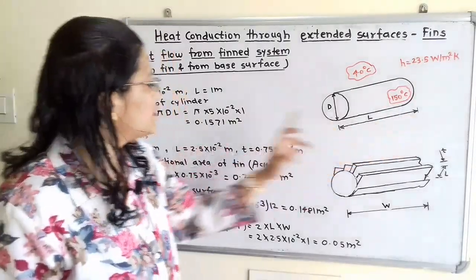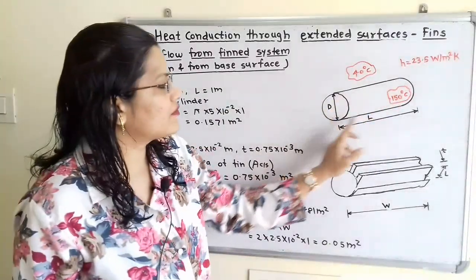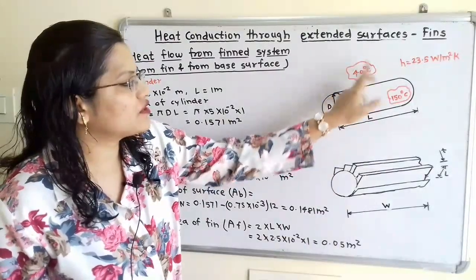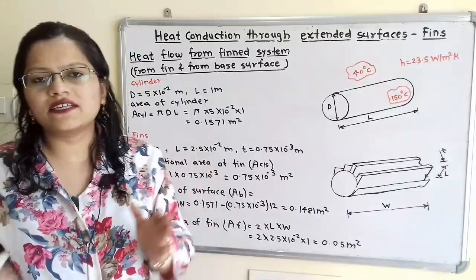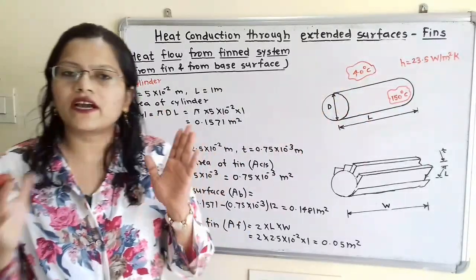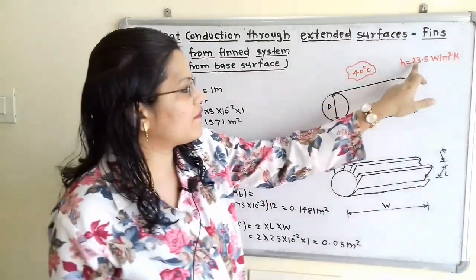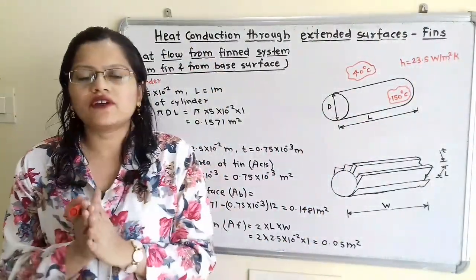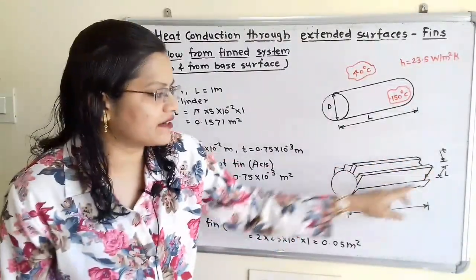The length of this cylinder is 1 meter. The surface temperature of the cylinder is 150 degrees Celsius and the ambient temperature is 40 degrees Celsius. Heat is transferred from the base of the cylinder as well as from the fins through convective heat transfer, and the convective heat transfer coefficient H = 23.5 W/m²·K.